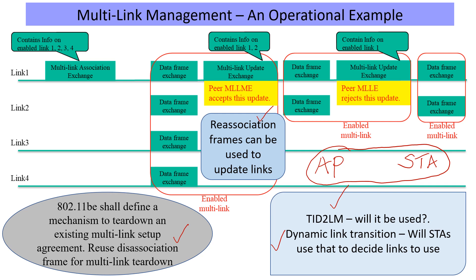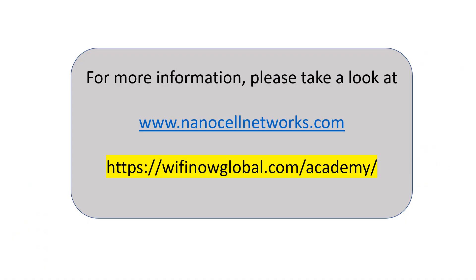In cellular, carrier aggregation is very well orchestrated by the base station. But in the case of Wi-Fi, you might find the AP thinking one way and the client thinking another way, which could create some interesting challenges. The question is how well they will collaborate. Hopefully, there will be more collaboration and cooperation, rather than anything resulting in poor use of MLO. That was a short introduction to MLO from the perspective of how control is established, in comparison with cellular. We will come back with more on Wi-Fi 7 MLO.